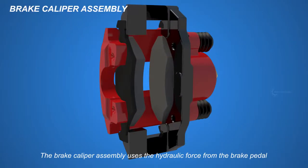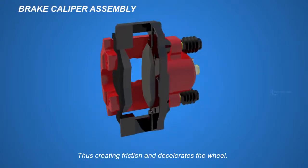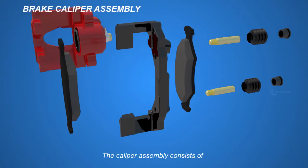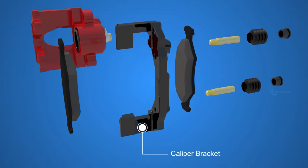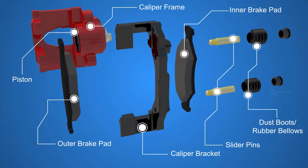The brake caliper assembly uses the hydraulic force from the brake pedal to squeeze the brake pads to the rotor surfaces, thus creating friction and decelerating the wheel. The caliper assembly consists of the caliper bracket, slider pins, dust boots, inner brake pad, outer brake pad, caliper frame, and inside it, the piston.